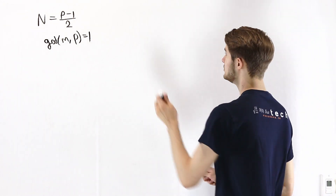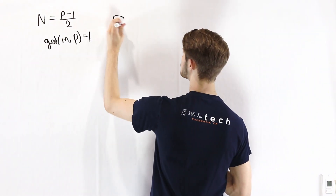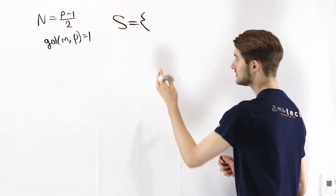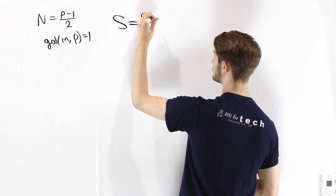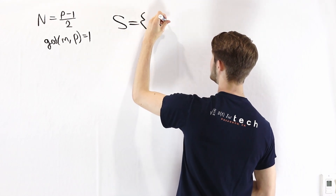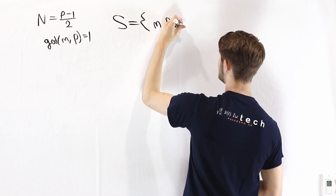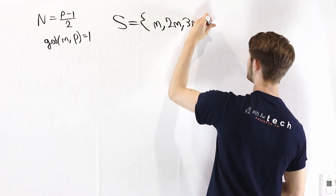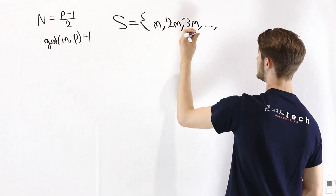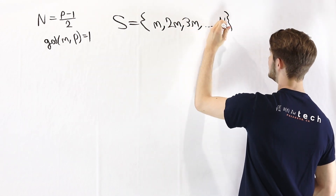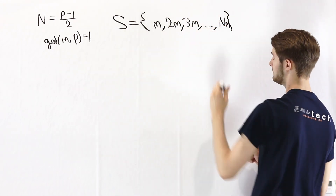The first thing we're going to do is construct the set S. This set S is going to contain the elements m, 2m, 3m, 4m, 5m, and so on, up to n times m.